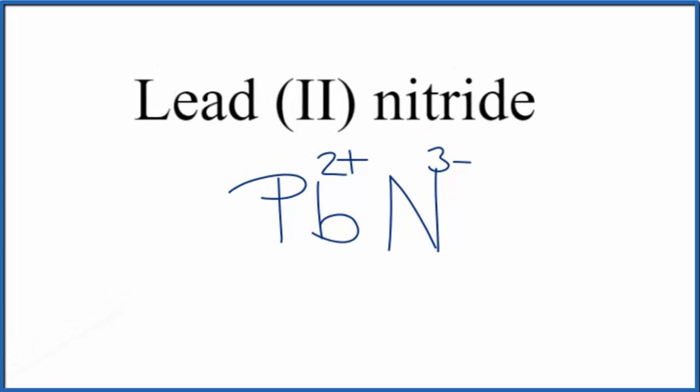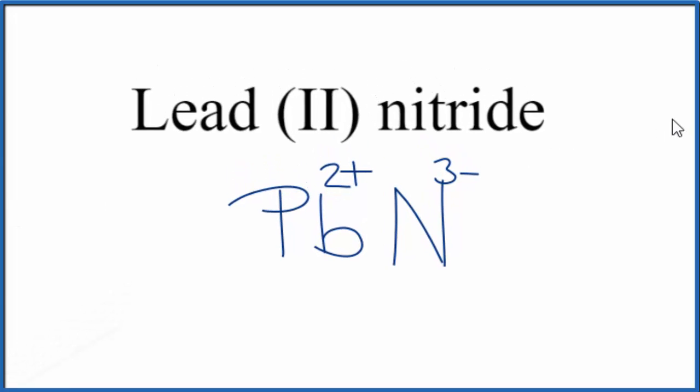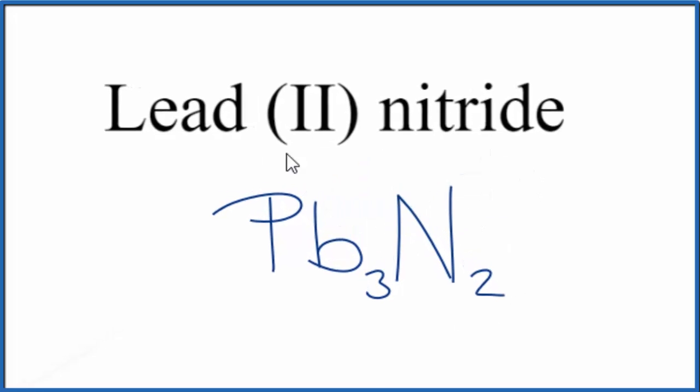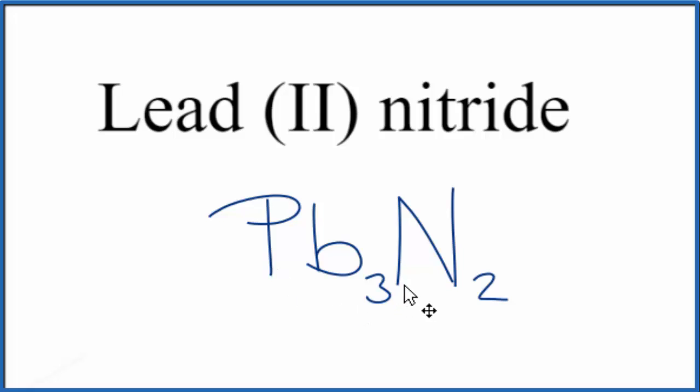Since lead two nitride is a neutral compound, it doesn't say ion after the name, these charges are going to have to balance. We're going to have to have these add up to a net charge of zero. So to do that, we can use the crisscross method. We can move the 3 here and the 2 here, get rid of these symbols. And the formula for lead two nitride is Pb3N2.